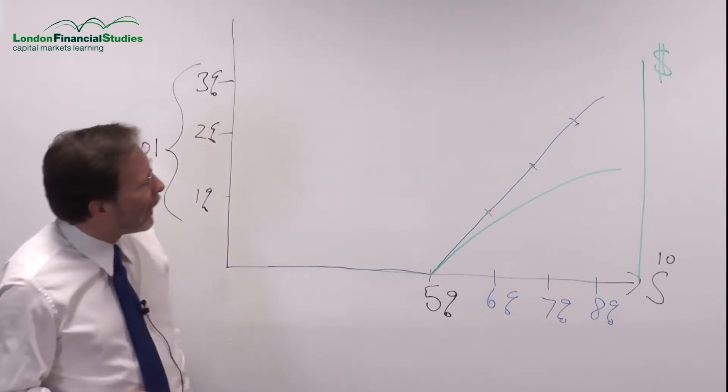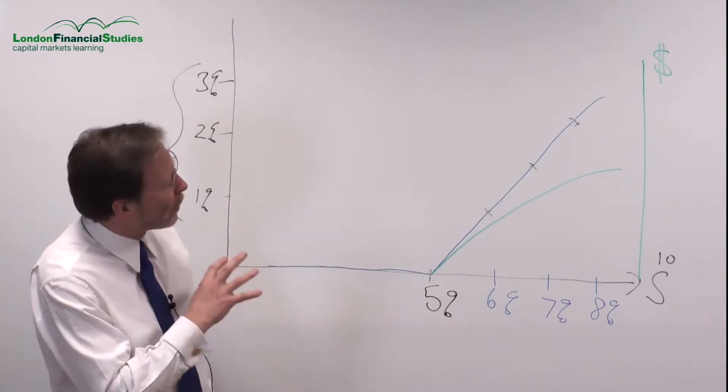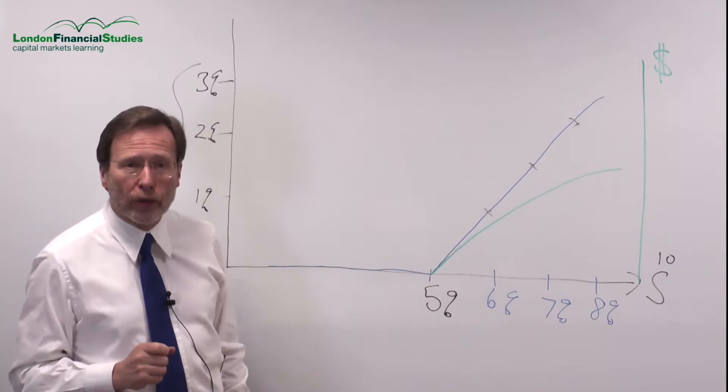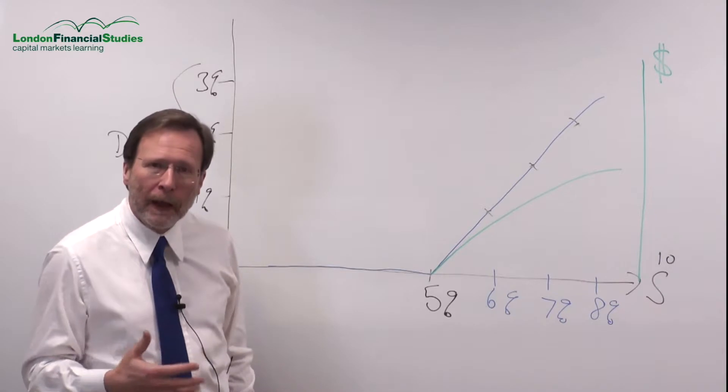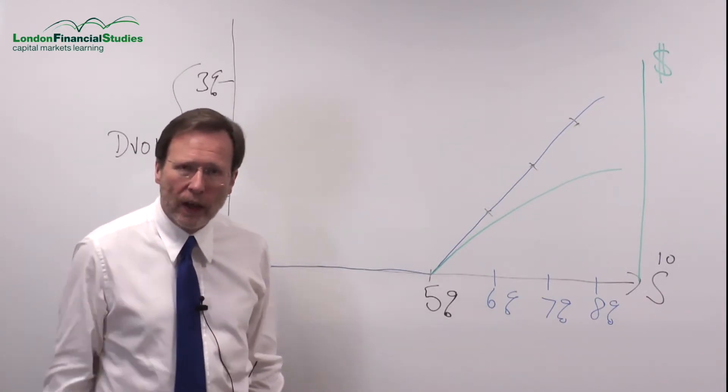Now, if we then start to think a little bit about how we look at the swaption as a replicator for a CMS, a constant maturity swap, we can start to think about what the payoff of the swaption and the CMS looks like together. So I'm going to switch back to the slides for this.